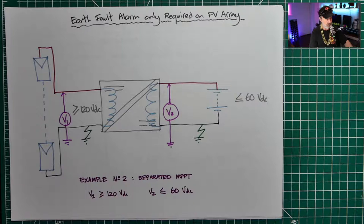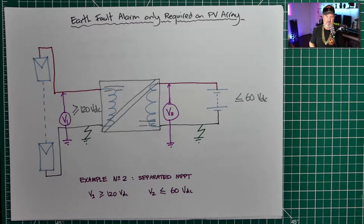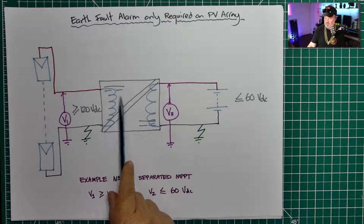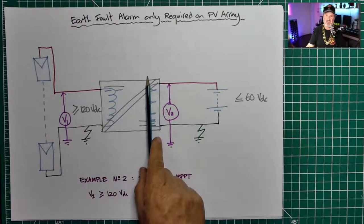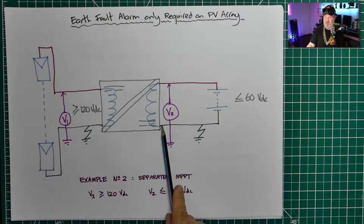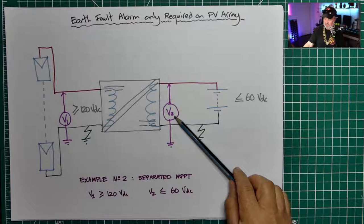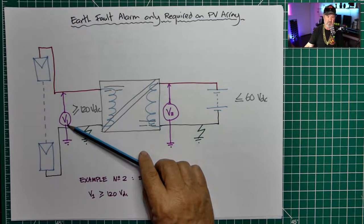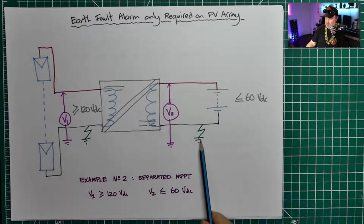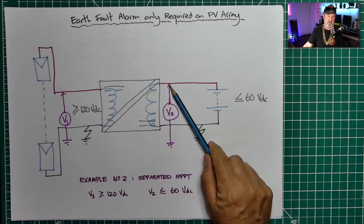Now here we've got a separated MPPT — not so common. My guest might be able to tell me which ones have galvanic separation available on the market in Australia. If it does have galvanic separation — shown here as an isolating transformer inside — that means electrons on the PV array side can't cross over to the electrons on the battery side. Therefore the battery's voltage determines V2 and the PV array voltage determines V1. If we have an earth fault on this side, we're not going to see the PV array voltage appear on the battery port.